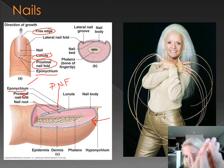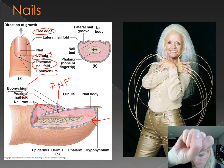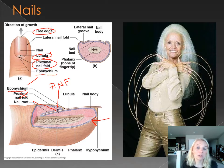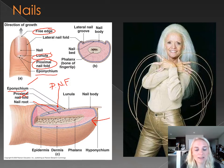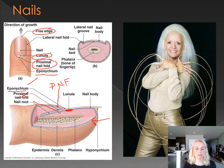Then we have what's called the lunula. On my fingers, I really only see a lunula on my middle fingers and my thumbs. The lunula is that little clear crescent — lunula means 'moon,' so it kind of looks like a little crescent moon. It shows the attachment point of where the nail is attaching to the skin underneath.